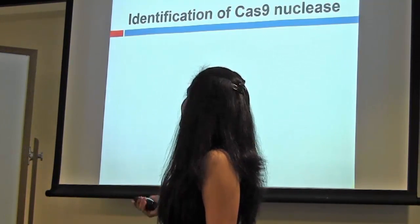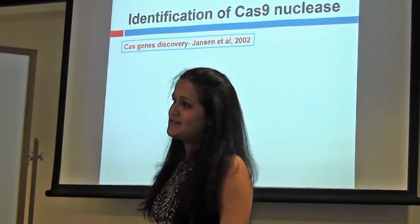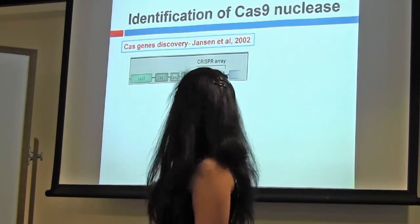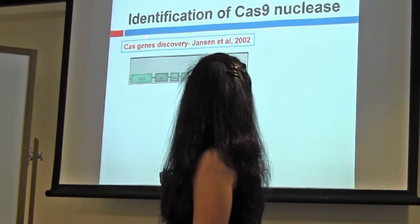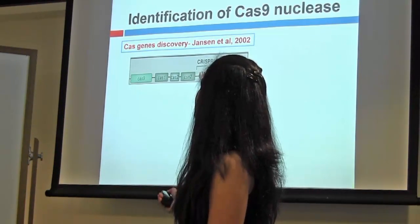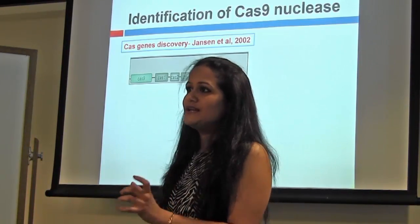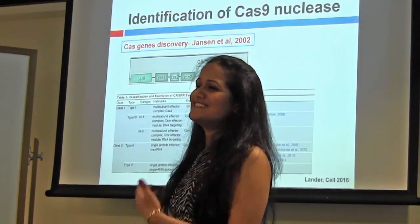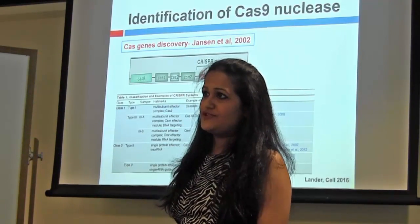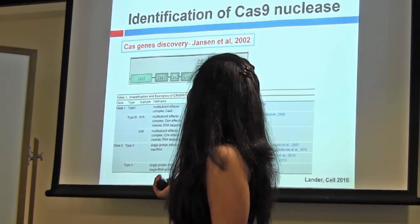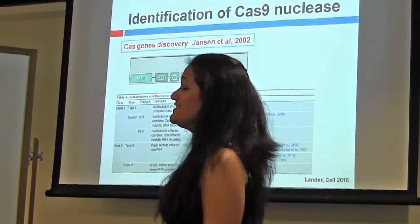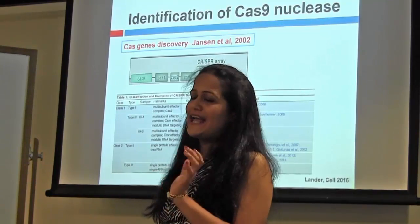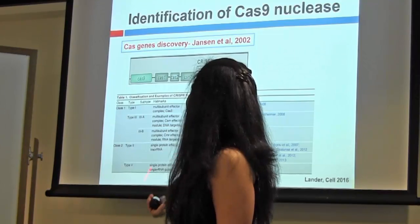While all this was happening, other scientists in 2002 — Jansen et al. — looked at the DNA sequence proximal to the CRISPR loci. They found that in almost all CRISPR loci, the flanking region contained gene sequences encoding DNA nuclease enzyme proteins, which he named Cas proteins. By 2016, we know there are four different types of Cas proteins with different characteristics. The most abundant Cas protein used for CRISPR in the lab is Cas9 nuclease.